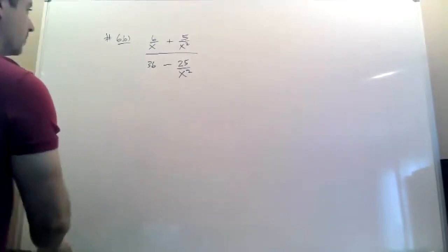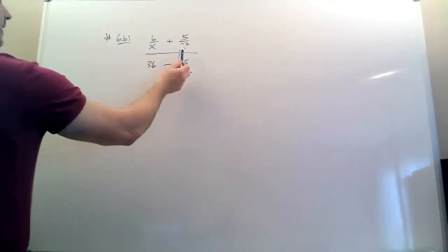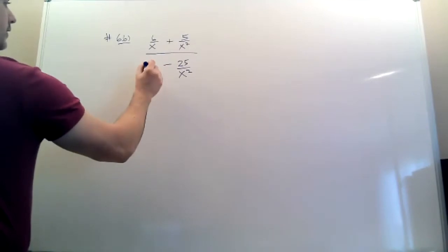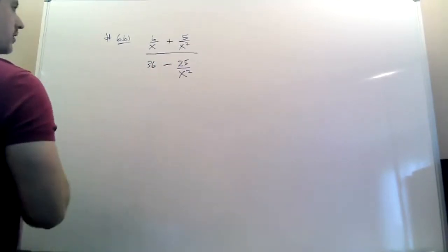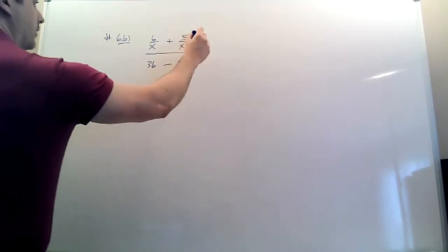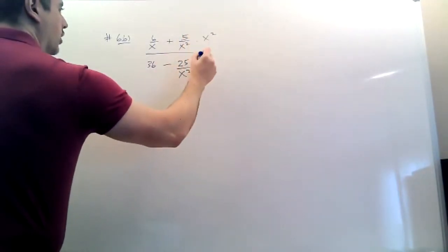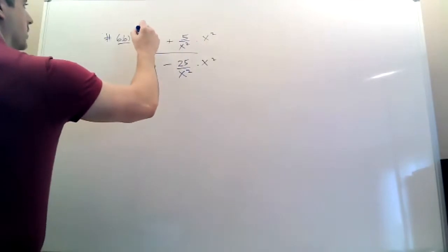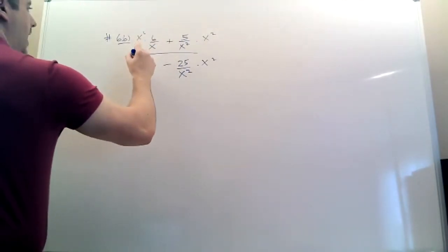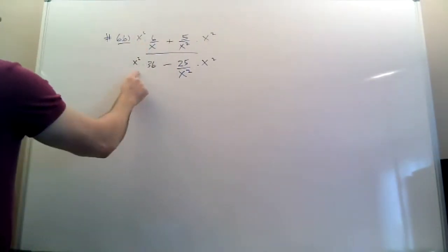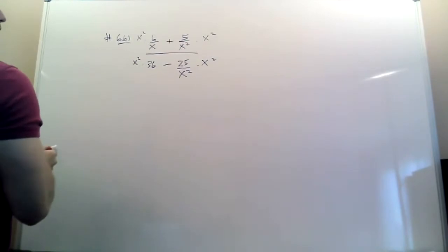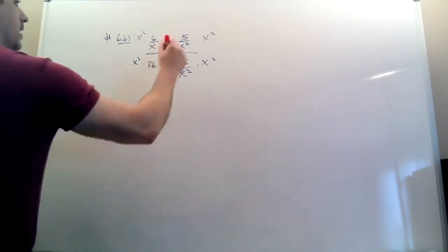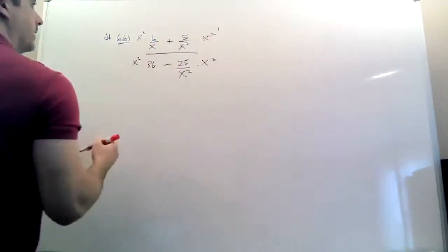The sixth question requires finding the LCD of all the denominators. You can put a one here but you don't need to — it's pointless. You're going to multiply everything by x squared. The goal is to get rid of all the denominators, so every fraction — even though this is not technically a fraction, there's a one — everybody has to get multiplied by x squared. Then you just do the division; they cross out and go away.